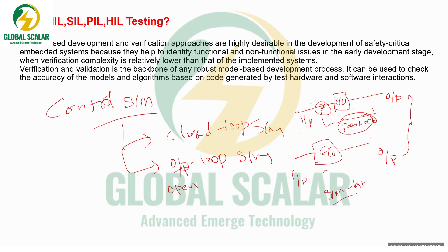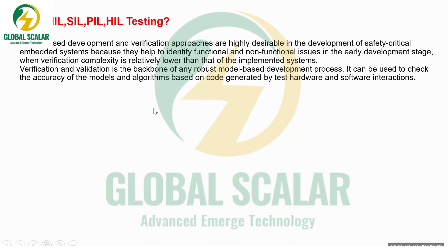HIL — Hardware in Loop — is called so because of the feedback mechanism; it is a looping of the control system with feedback. Hardware in Loop means the looping of the control system into specific issues — it has a feedback mechanism. Model-based development and verification approaches are highly essential in developing safety-critical embedded systems.